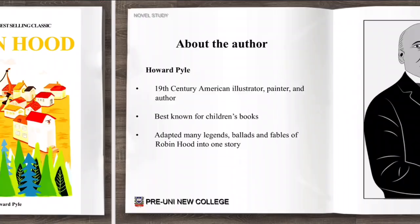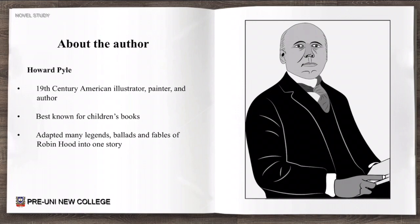Let's learn a bit about the author first. Howard Pyle was a 19th century American illustrator, painter and author. He was best known for his children's books and he adapted many legends, ballads and fables of Robin Hood into one story. So Robin Hood was not originally created by him — it's a very old tale — but he adapted and collected all of the different Robin Hood stories and put them into one book.